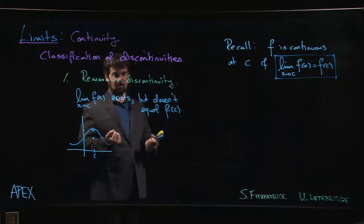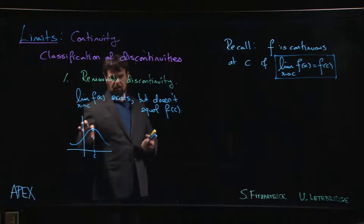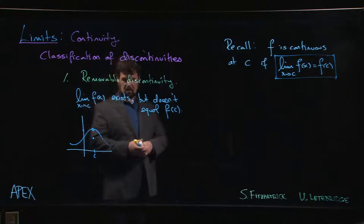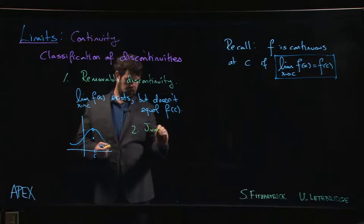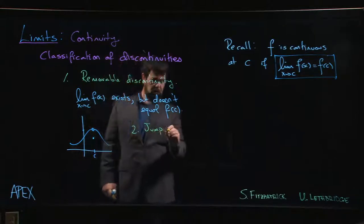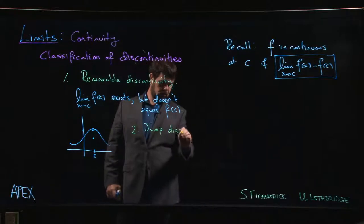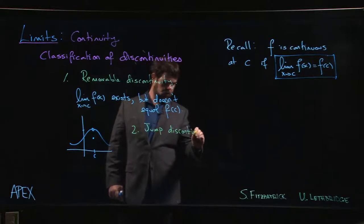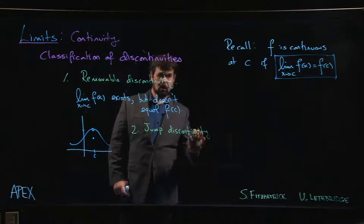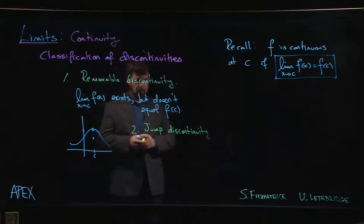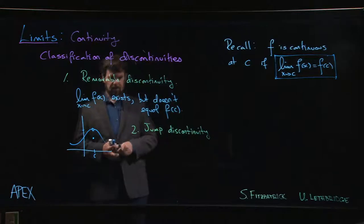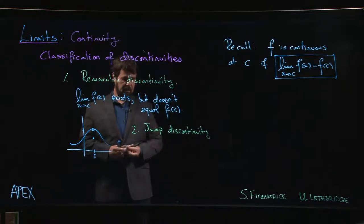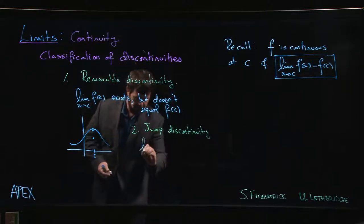The second type is called a jump discontinuity. All other types of discontinuities are going to occur because the limit fails to exist. In a jump discontinuity, the limit fails to exist in a fairly simple way: the limit fails to exist because although the left-hand limit and the right-hand limit are both defined, they're not equal.